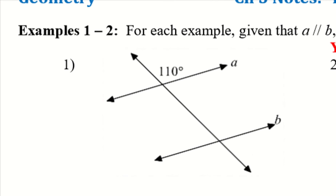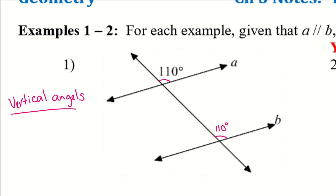So we want to name every single angle. Starting with corresponding angles, since we just learned that — this angle and this angle are corresponding angles, so this has to be 110 degrees. Now we have to apply other things we know. We have to remember vertical angles, and these are congruent. So my vertical angles here are each 110 degrees.